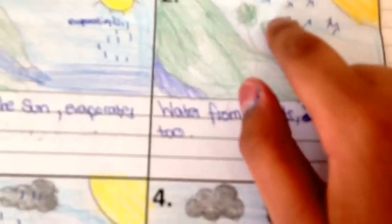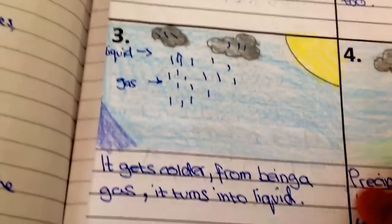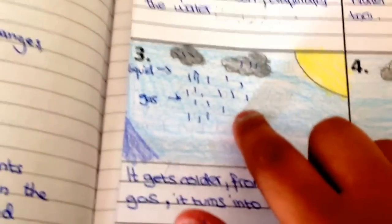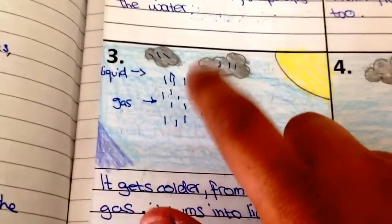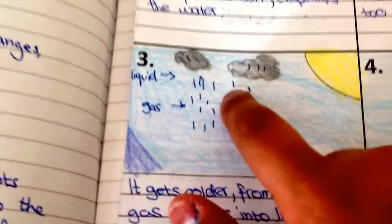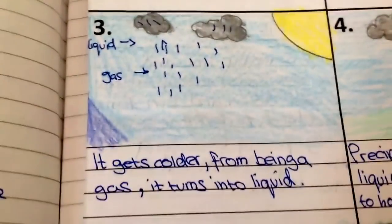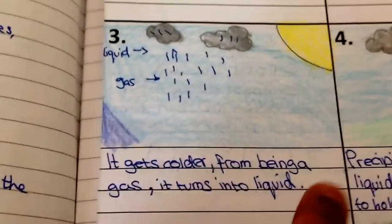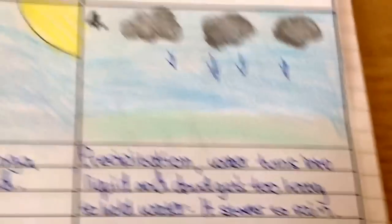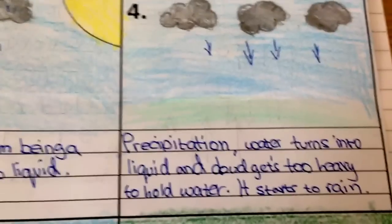The second stage is the water going up and forming a cloud. The third stage is when it gets colder as the water goes up. From being a gas it turns into a liquid inside the clouds — and as I was saying, it forms a cloud.